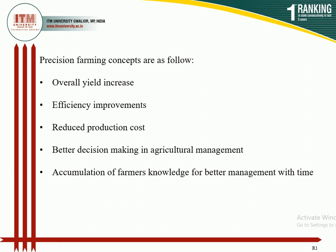The third concept is reduced production cost. The application of exact quantities at particular timing reduces the cost of inputs like fertilizer, pesticide, and insecticide, and improves yield while reducing cost per unit crop. The fourth is better decision-making in agricultural management. Agricultural machinery, equipment, and tools help farmers acquire accurate information which is processed and analyzed for appropriate decisions in land preparation, seeding, fertilizer, pesticide, herbicide application, irrigation, drainage, and post-production technology.